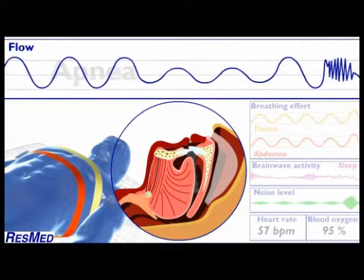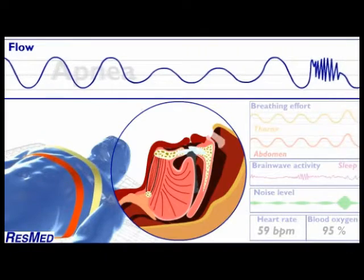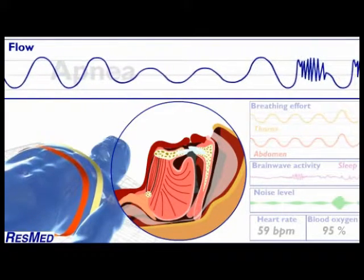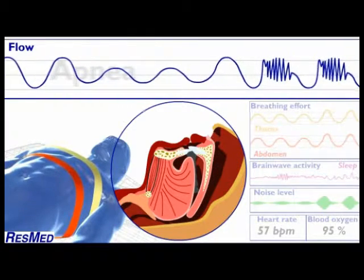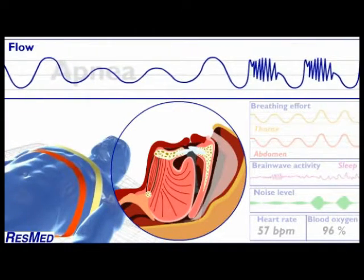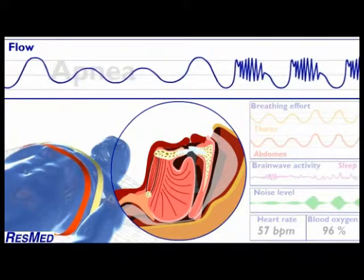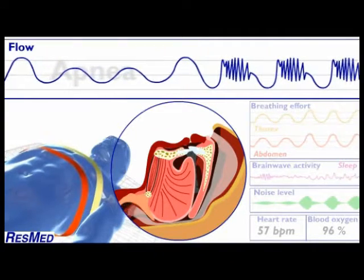As the muscles in the upper airway start to relax, the suction effect of each inward breath tends to draw the soft tissues down towards the back of the airway. Over a series of breaths, the airway progressively narrows and the airflow decreases.